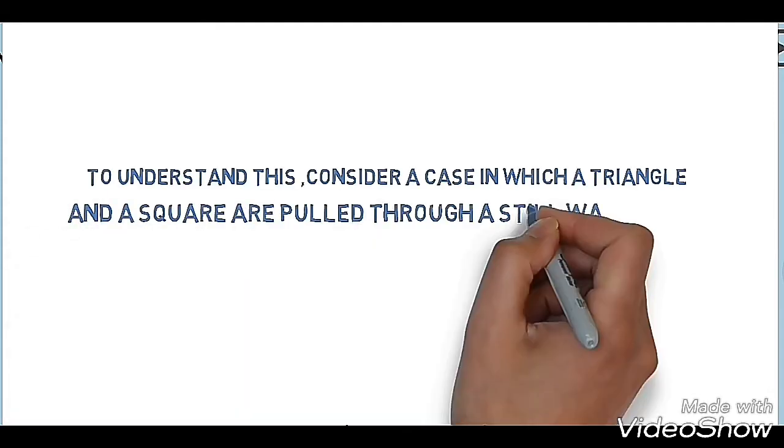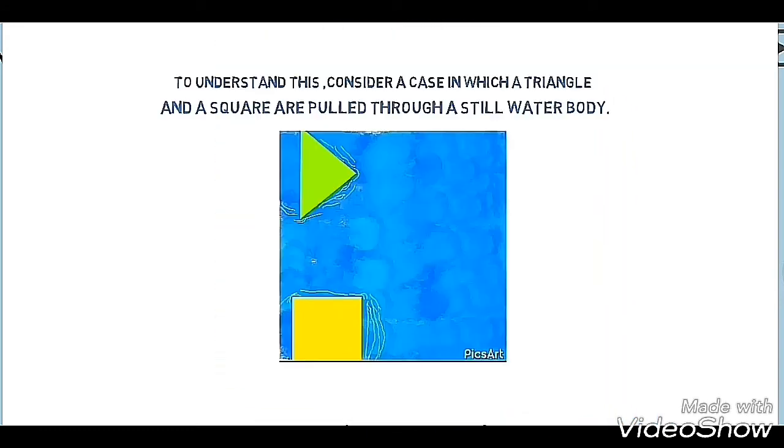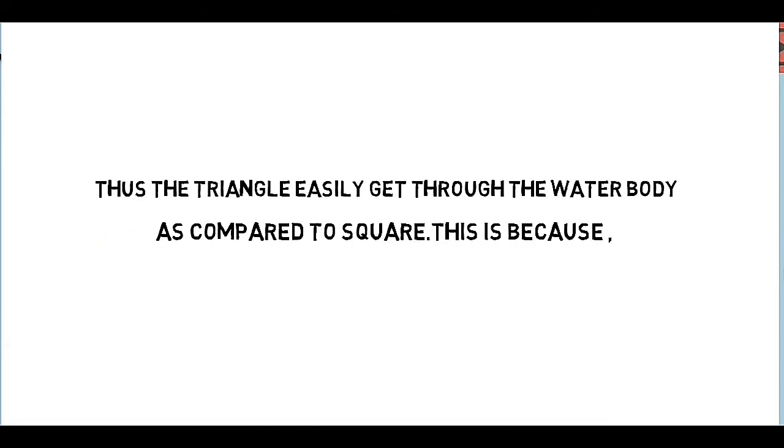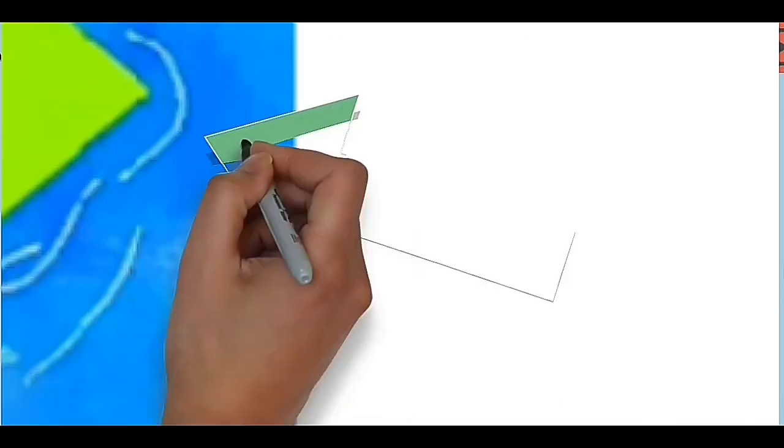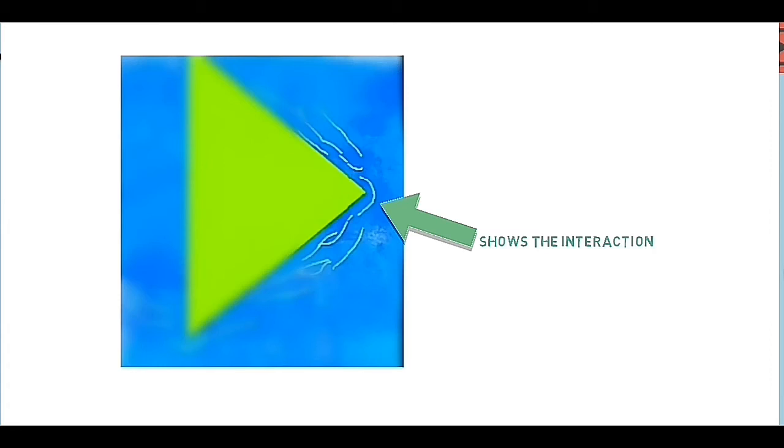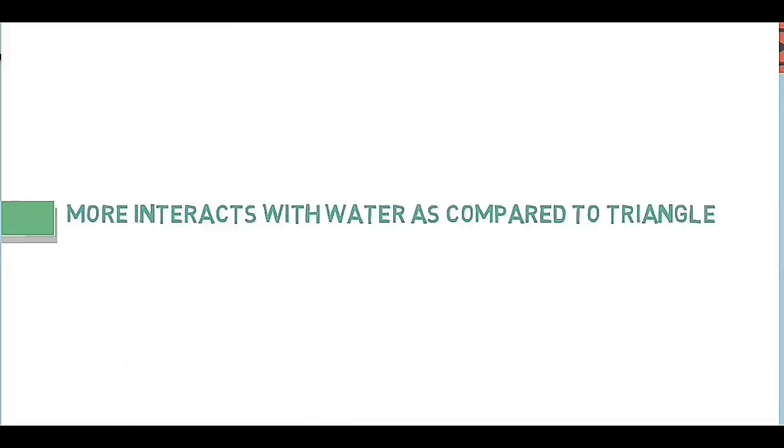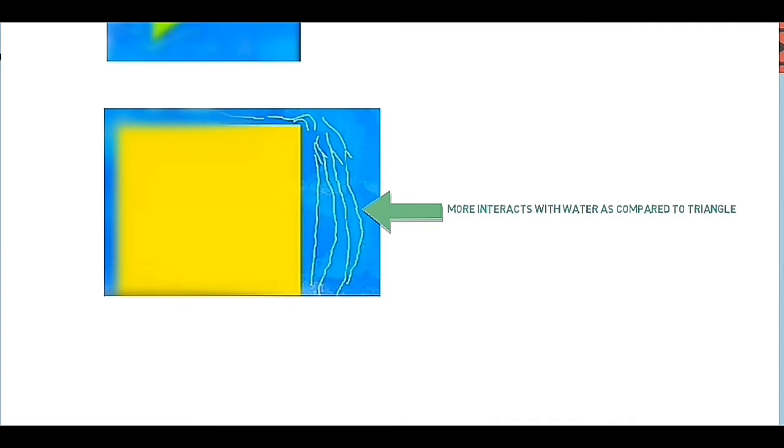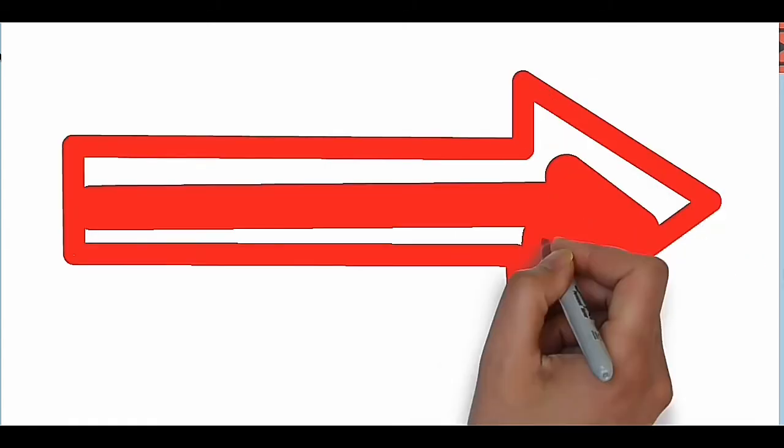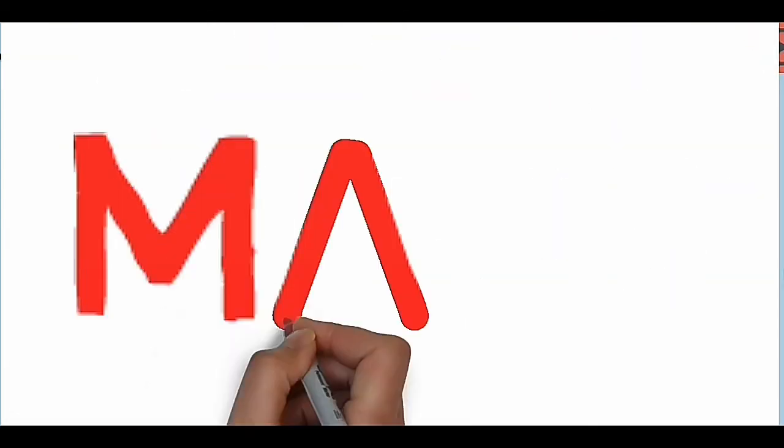To understand this, consider a case in which a triangle and a square are pulled through a still water body. Now the one that is narrower can be pulled much more easily than the broader one. Thus the triangle easily gets through the water body as compared to the square. This is so because in the direction of its motion, the triangle does not have to be so interactive with the water as it easily displaces the water to proceed further. Whereas in the case of square, in the direction of its motion, it has to struggle badly with water. The struggle is analogous to the interaction and the drag due to the water is similar to the drag of the Higgs field, i.e., mass.